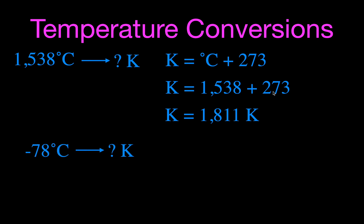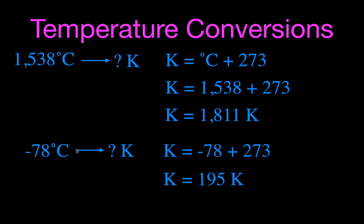We can do the same thing with a negative temperature. For negative 78°C, we use the same equation but substitute minus 78, and we get 195 Kelvin. Just make sure you keep your negative and positive signs straight.